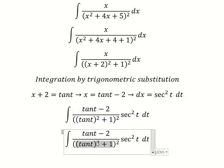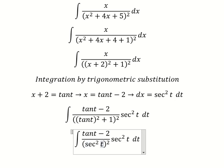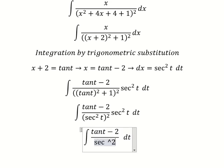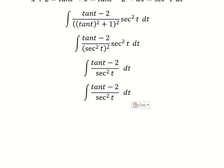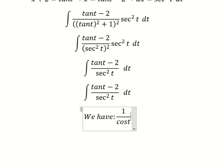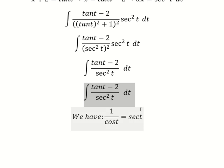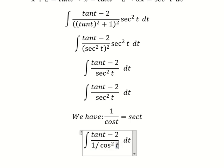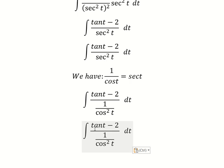So we have sec²(t) in the numerator, and we can simplify this over the denominator. Next, we apply the formula and need to transform the expression. We put cos²(t) in here.